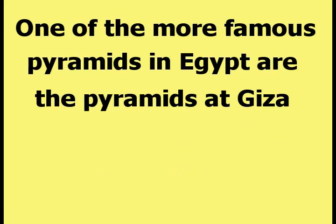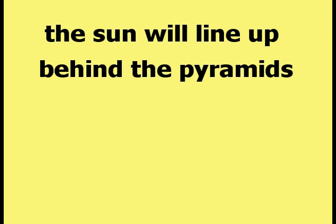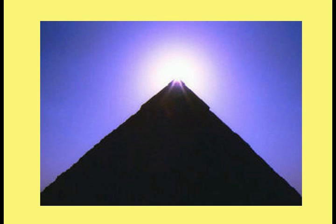One of the more famous pyramids in Egypt are the pyramids at Giza. At certain times during the year, the sun will line up behind the pyramids as shown in this picture. The sun is centered over the peak of the pyramid so that the pyramid cuts into and obscures part of the sun.